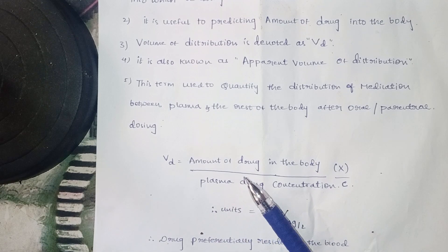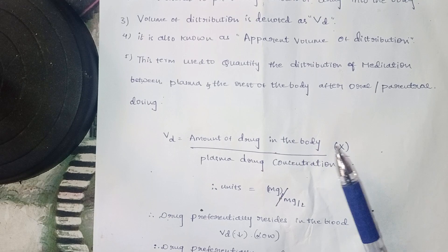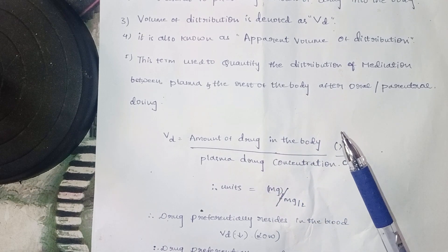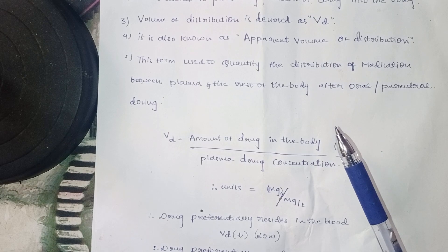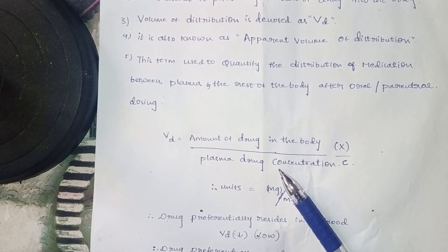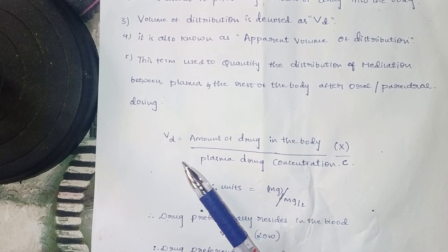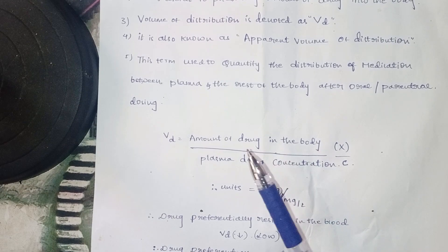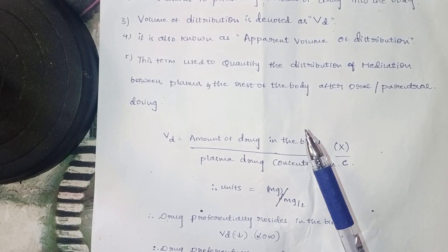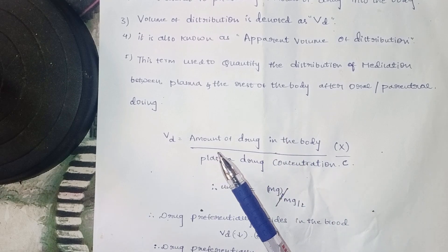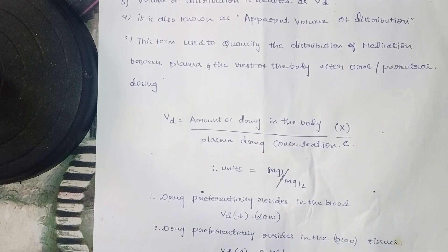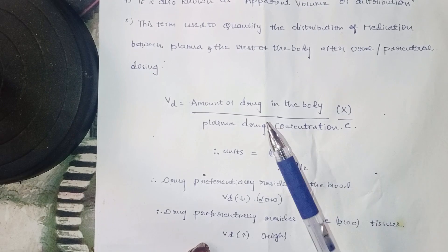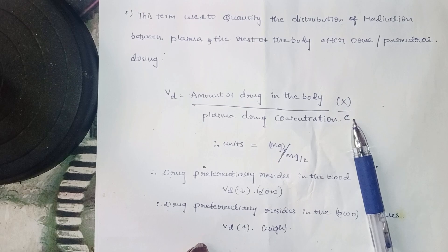The formula is: VD equals the amount of drug in the body divided by the plasma drug concentration. VD is directly proportional to the amount of drug distributed into the tissue. It is inversely proportional to the plasma drug concentration. The amount of drug in the body is denoted as X and plasma concentration as C.